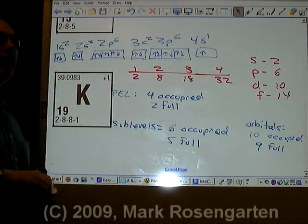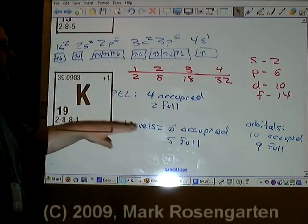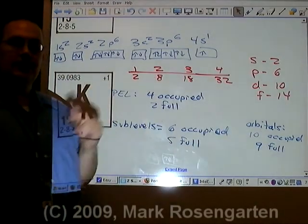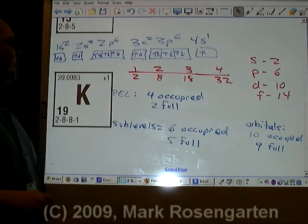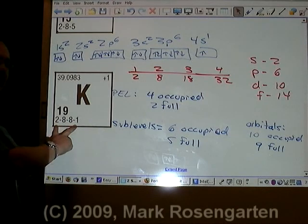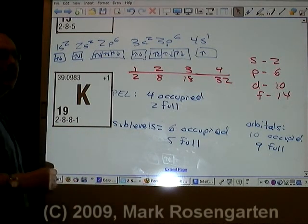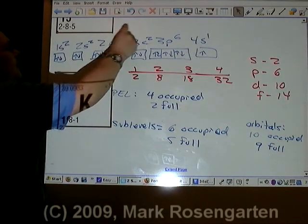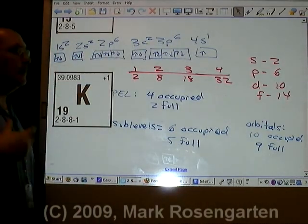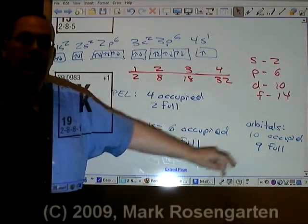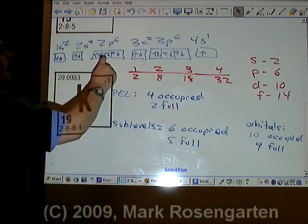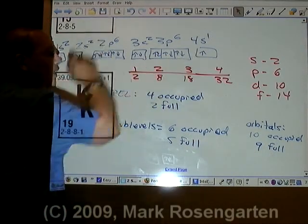And that's how you determine whether your principal energy level, sublevel, or orbital is occupied or full. For the principal energy level, just use the basic configuration they give you on the table. To find out how many sublevels are occupied or full, break it down into the expanded configuration. To find out how many orbitals are occupied or full, draw your box diagram, or your orbital notation as it's otherwise called.